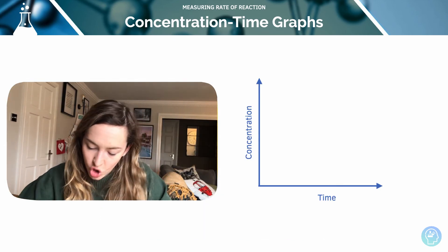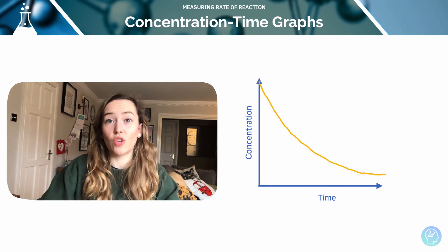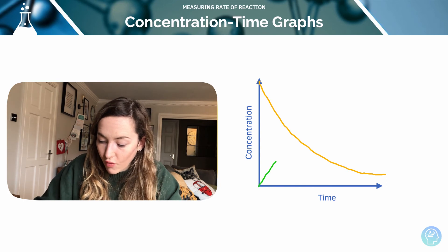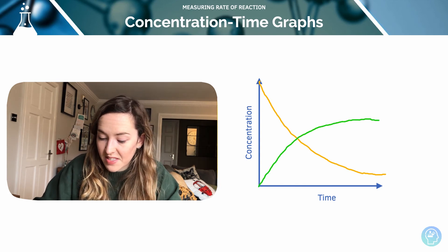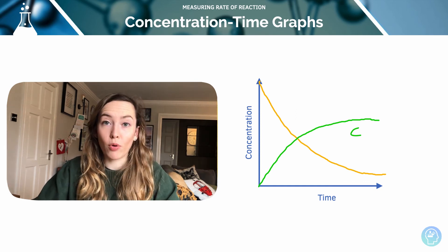So remember we can have the change in the reactant - so it would look something like this because the reactant is going to reduce over time - or we can have the change in the formation of a product. So my line C, for example if I call it that, shows how I make my product over time.